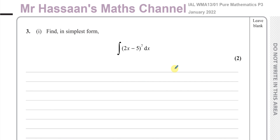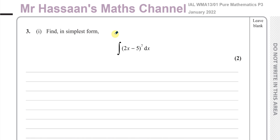It says find in simplest form the integral of (2x minus 5) to the power of 7 with respect to x. Now here we have something which is of the form where you have a function multiplied by its differential. It's the reverse of the chain rule — this is f'(x) times f(x), something of this form. The differential of what's inside this function is a constant.